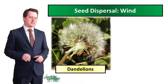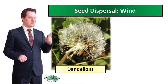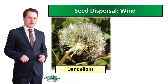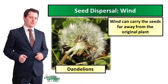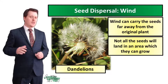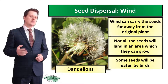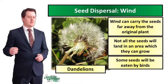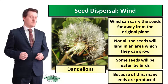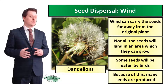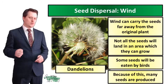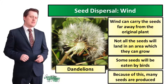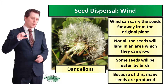Let's look at how seeds can get from one place to another, starting with wind dispersal. The wind can carry seeds far away from the original plant, but not all the seeds will land in an area they can grow, and some of these seeds are going to be eaten by birds. This means that our plant has to produce lots of seeds to increase the likelihood that one seed will land somewhere and begin to grow. Because these seeds are carried by the wind they often have a very small mass.